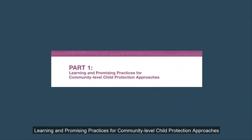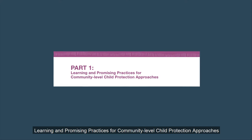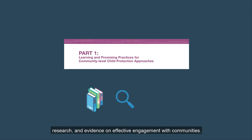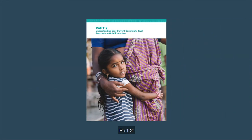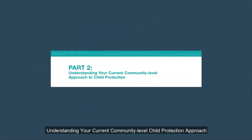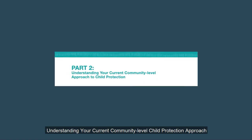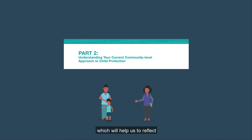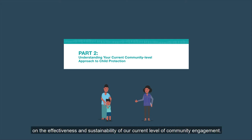Part 1, Learning and Promising Practices for Community-Level Child Protection Approaches, describes the latest learning, research, and evidence on effective engagement with communities. Part 2, Understanding your current community-level approach to child protection, introduces different types of engagement with communities which will help us to reflect on the effectiveness and sustainability of our current level of community engagement.